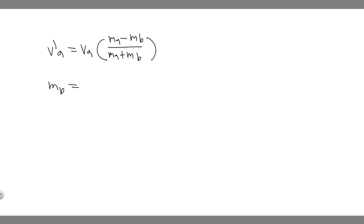If you want to solve for mb, just manipulate this equation and you're going to get that mb equals va minus v prime a over v prime a minus va, and this is all multiplied by ma. This is what we're going to use to solve it.